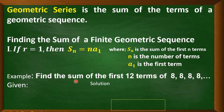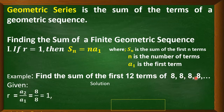Example: find the sum of the first 12 terms of 8, 8, 8, 8. We have to check the common ratio. By formula, the common ratio is a sub 2 divided by a sub 1. So, 8 divided by 8, that is equal to 1.